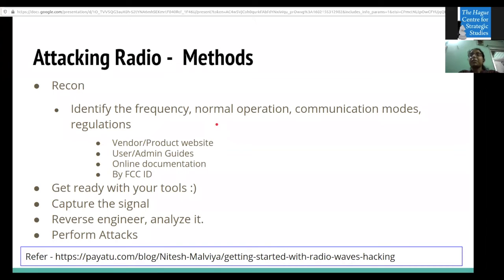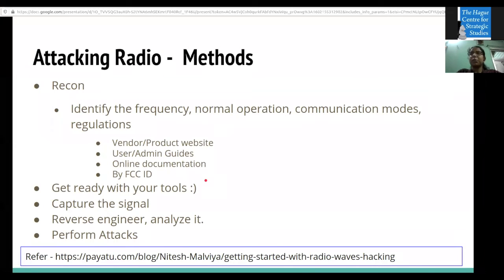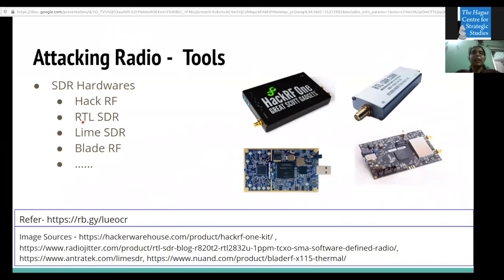For communication, you have Zigbee, Wi-Fi, and other wireless protocols. First identify what frequency the device operates on, how it normally operates, and check radio-related regulations in your region before attacking. Then set up your tools, capture radio signals, reverse the captured signals, and perform the attacks. Always make sure about regulations when conducting radio-based attacks.